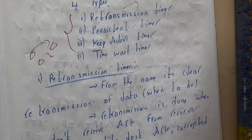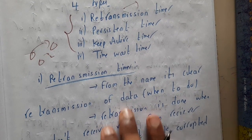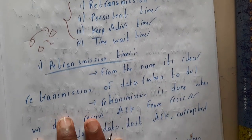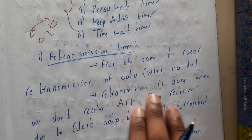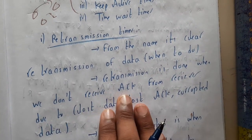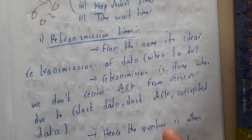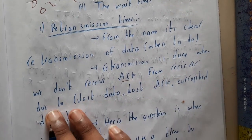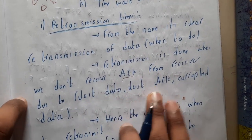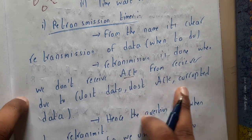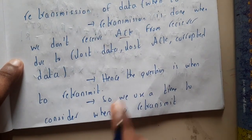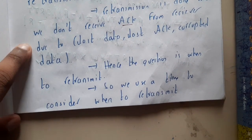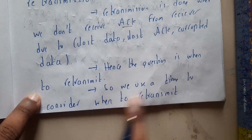Retransmission is simply resending the data when you don't receive an acknowledgement. There is no confirmation from the receiver that he received the data, so we resend it. The three reasons for retransmission are: loss of data, loss of acknowledgement, or corrupted data.